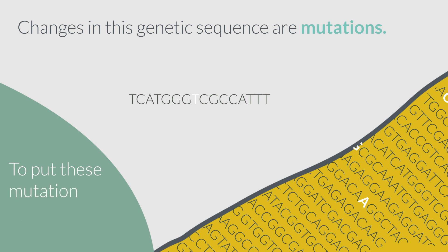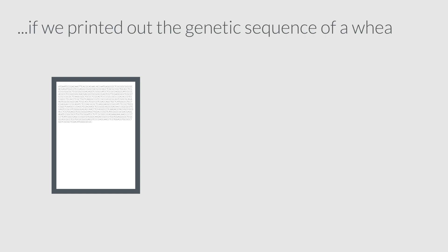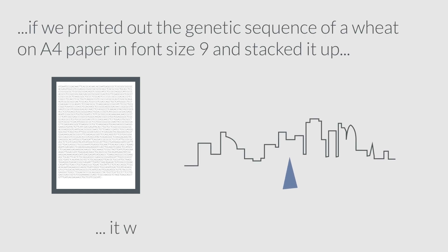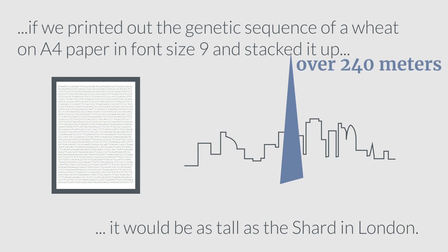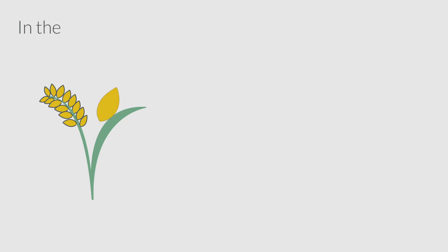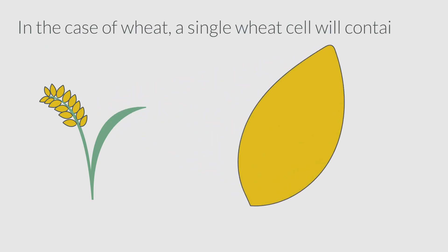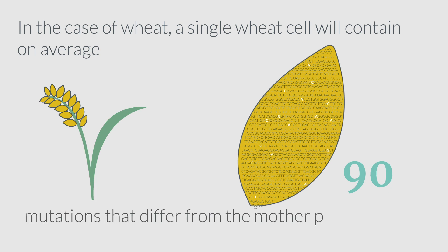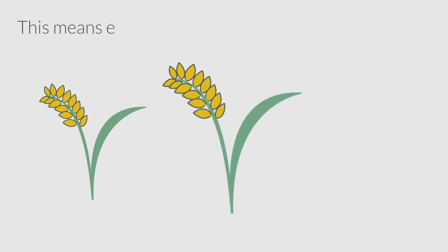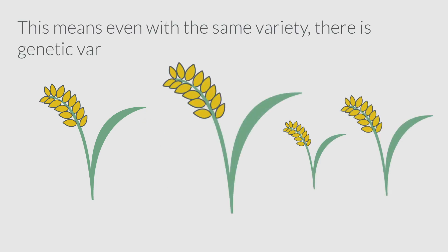To put these mutations into perspective, if we printed out the genetic sequence of wheat plants on A4 paper in font size 9 and stacked it up, it would be as tall as the Shard in London. In the case of wheat, a single wheat cell will contain on average 90 mutations that differ from the mother plant's genetic sequence. This means even within the same variety, there is genetic variation.